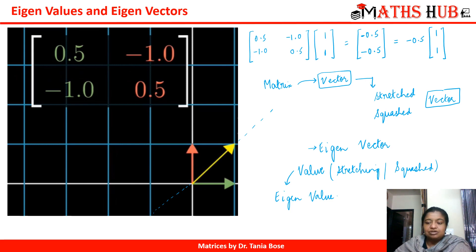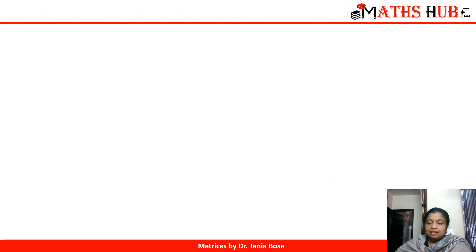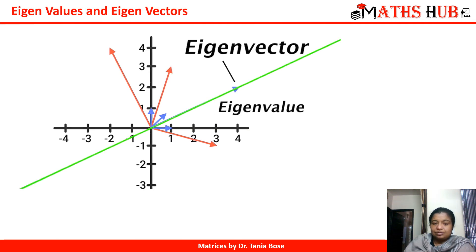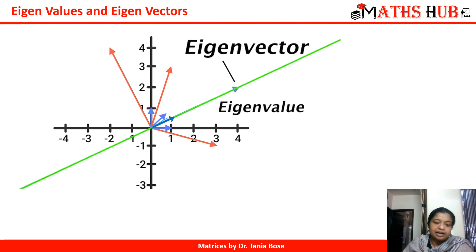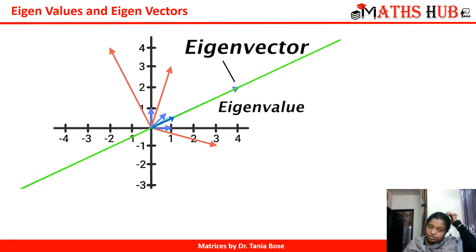This is the geometrical interpretation of eigenvalues and eigenvectors. Sometimes when you apply a matrix to a vector, the vector might get rotated and will not lie in the span. You can see this green line is the span of the blue vector. For this blue vector, the green line is the span. So when a matrix hits a vector and the result lies in the span — the span gets locked — that special vector is called the eigenvector, and the value with which it gets stretched or squashed is called the eigenvalue.